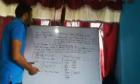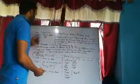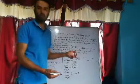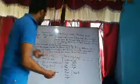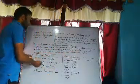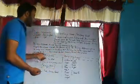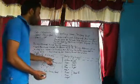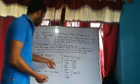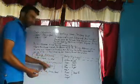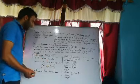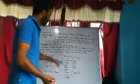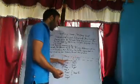The primary auxiliaries are: 'to do' — does, do, did; 'to be' — am, is, are, was, were, being, been; and 'to have' — have, has, had.